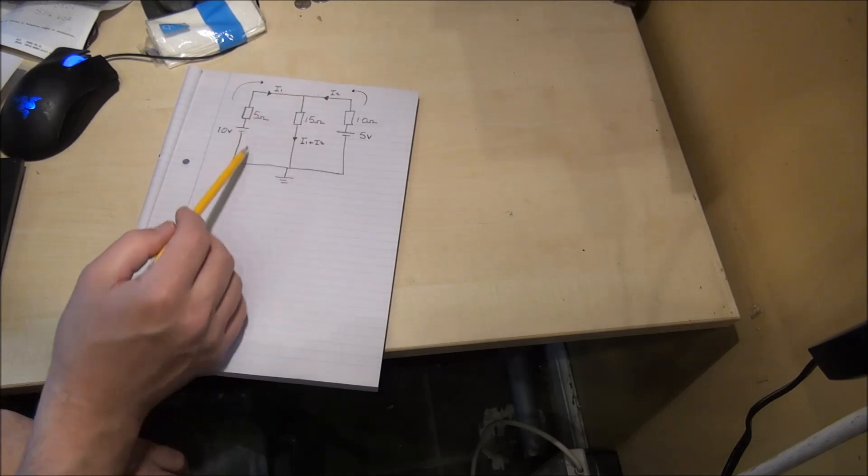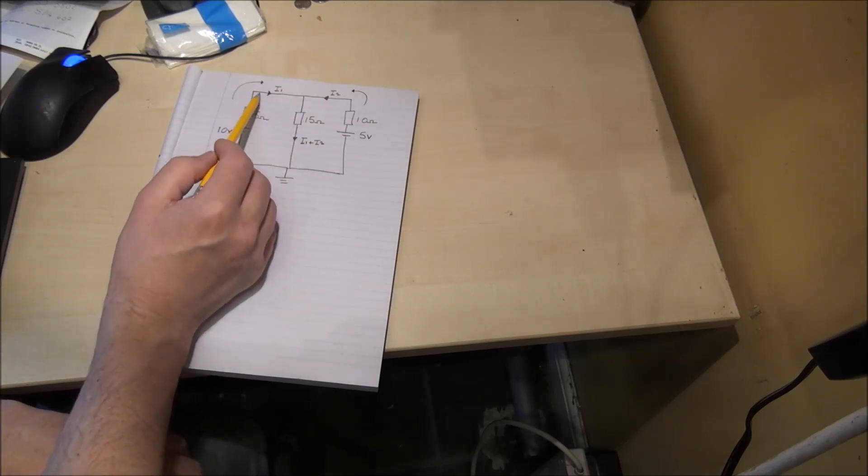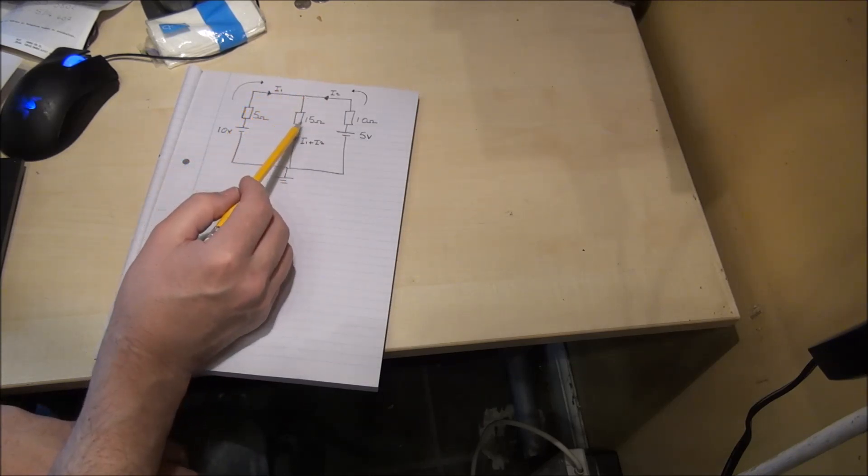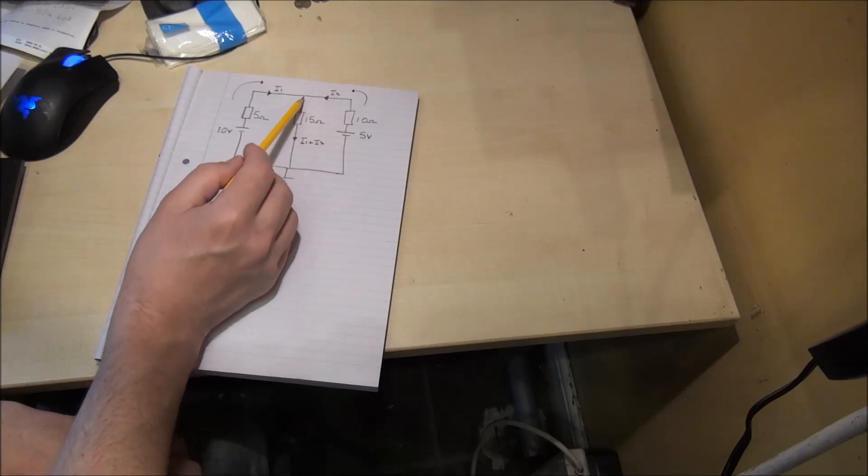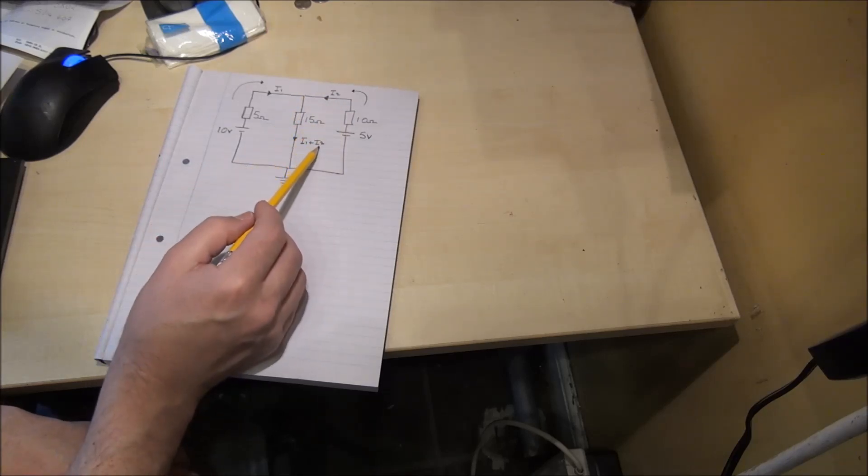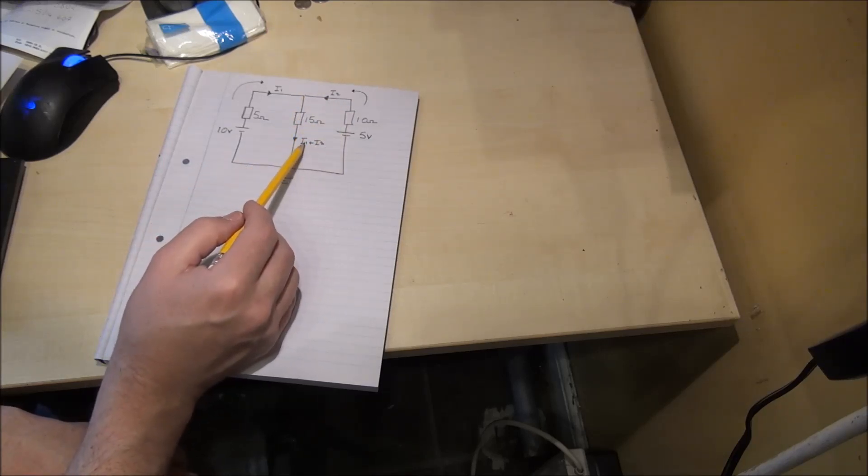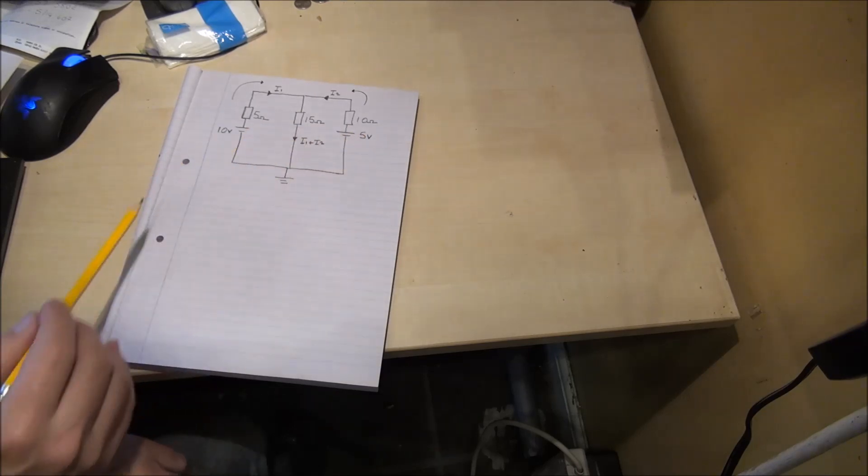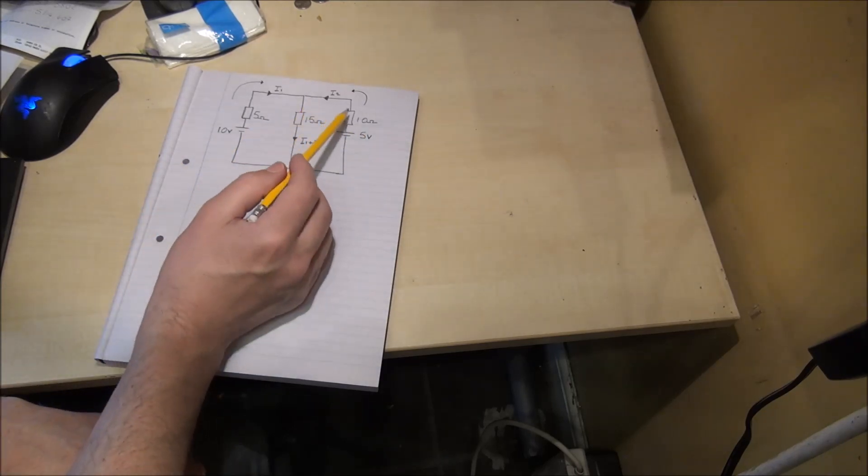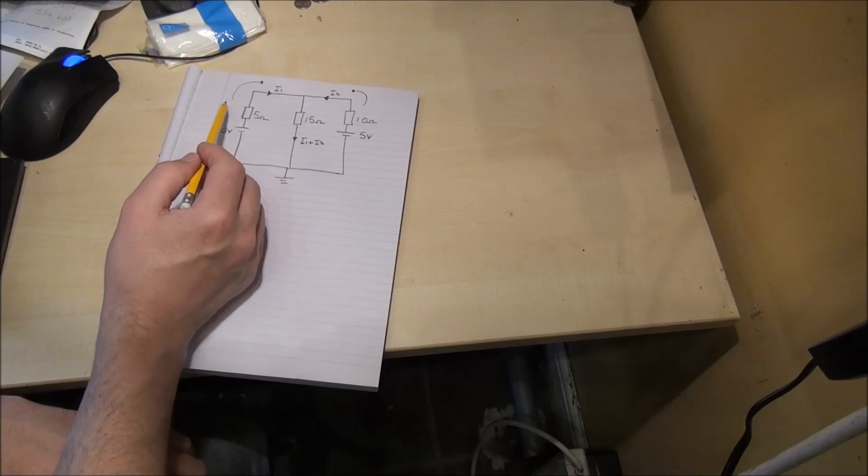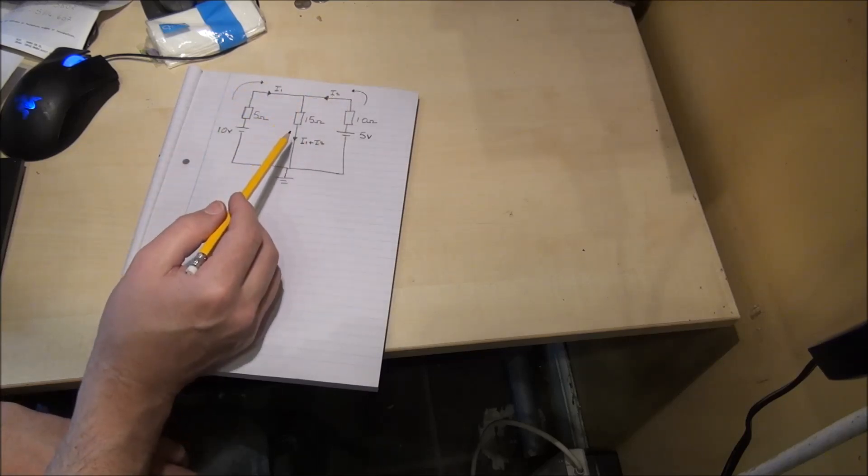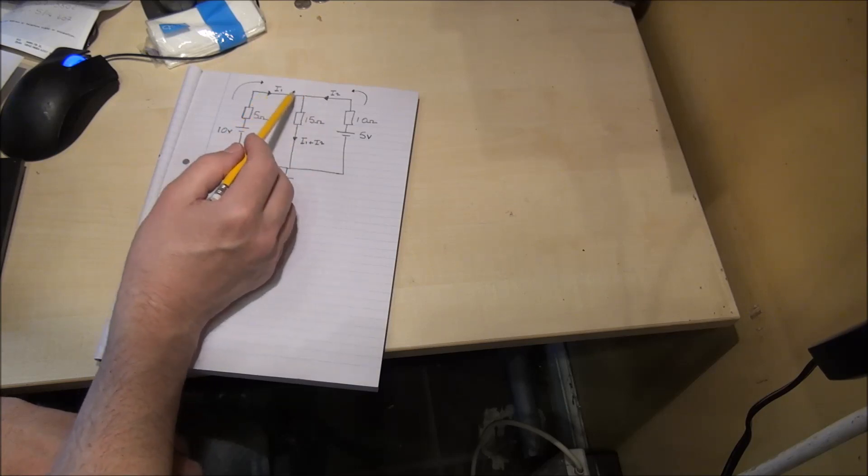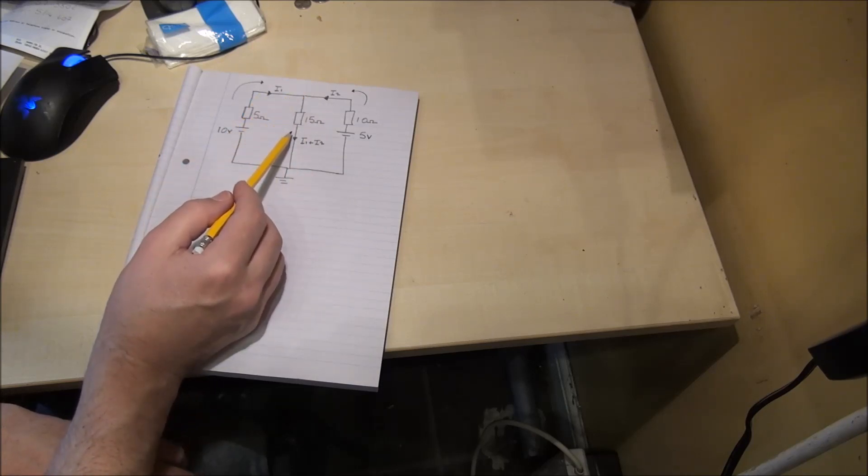We label the circuit with I1 flowing into the junction and I2 flowing into the junction as well, so we get I1 plus I2 and those currents are caused by both voltages. The direction of the currents is always drawn like this at first, but you will see later on that I2 and I1 do not necessarily both flow into the junction.